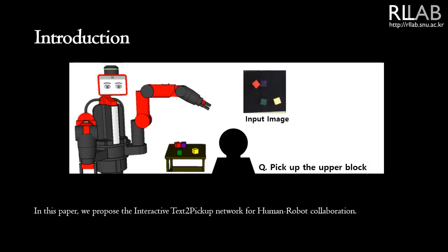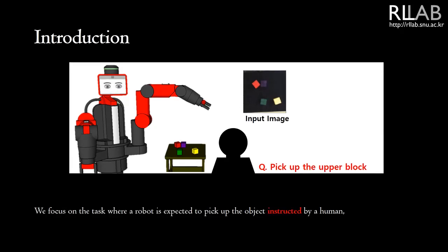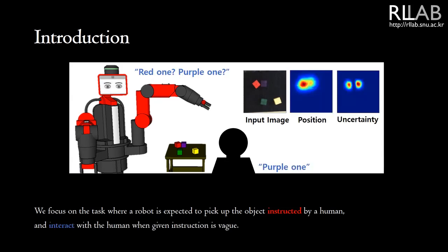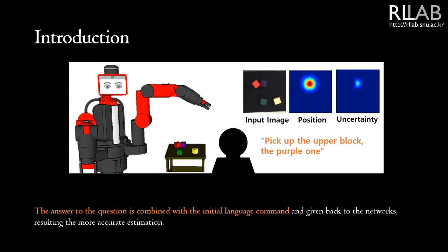In this paper, we propose an interactive text-to-pickup network for human-robot collaboration. We focus on the task where a robot is expected to pick up the object instructed by a human, and interact with the human when the given instruction is vague. The answer to the question is combined with the initial language command and given back to the network, resulting in more accurate estimation.